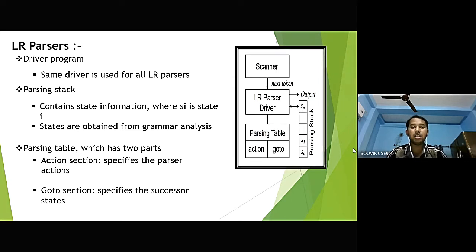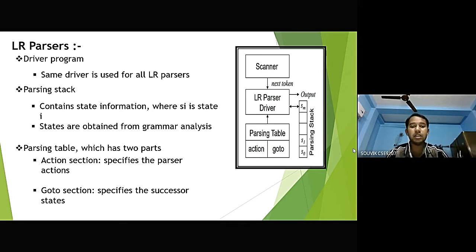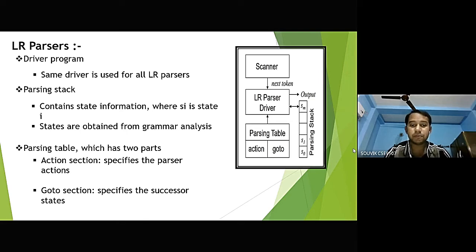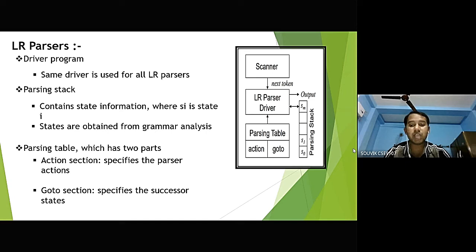An LR parser consists of a driver program — the same driver is used for all LR parsers — and a parsing stack, which contains state information where Si is state i, and states are obtained from grammar analysis. Next is the parsing table, which has two parts: the action section, which specifies the parser actions, and the goto section, which indicates the successor states. The parser driver receives tokens from the scanner one at a time, and uses the top state and current token to look up the parsing table. Different LR techniques produce different tables.